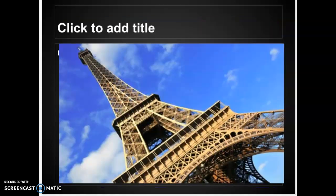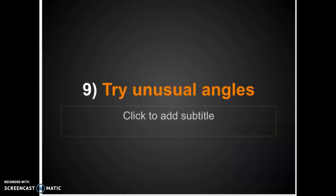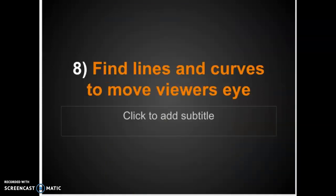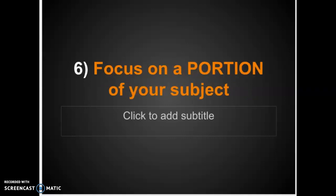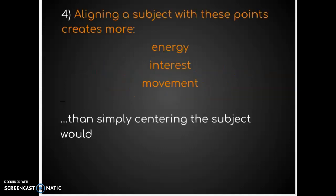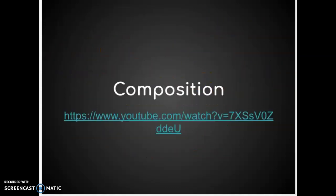Try unusual angles. Instead of taking something straight on, get on your belly and shoot from down low — here's a little puppy dog; get it from the dog's eye view or your little cousin's eye view. Or maybe you stand on top of a table and angle your camera down. These are different composition tips you should be trying to use in your photographs, and you'll be surprised at how well you can take photographs right away. Summarize the bullet points from this presentation, be sure to watch the video, and submit your work.